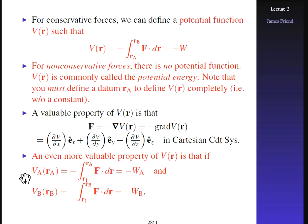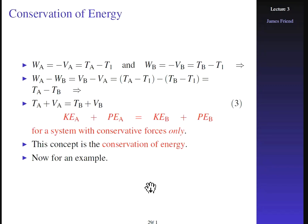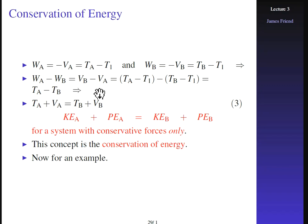For non-conservative forces, there is no potential function because changing the path would give a different result. For conservative systems, the kinetic energy at position a plus the potential energy at position a equals the kinetic energy at position b plus the potential energy at position b — conservation of energy. This is only true when all the work done on the particle is conservative. For non-conservative forces like friction or drag, this equation does not hold.